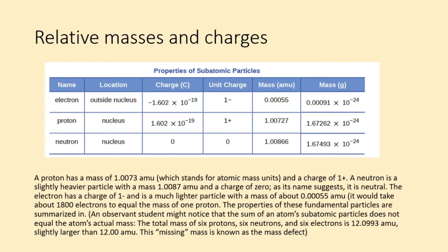The properties of these fundamental particles are summarized in. An observant student might notice that the sum of an atom's subatomic particles does not equal the atom's actual mass. The total mass of 6 protons, 6 neutrons, and 6 electrons is 12.0993 amu, slightly larger than 12.00 amu. This missing mass is known as the mass defect.